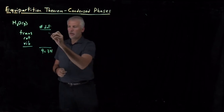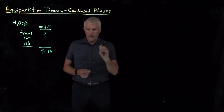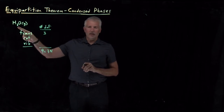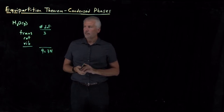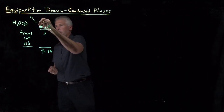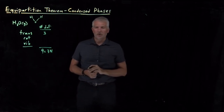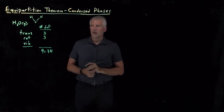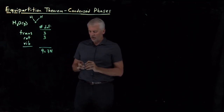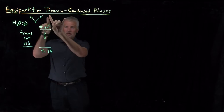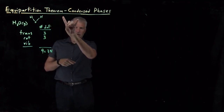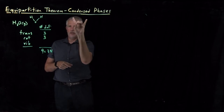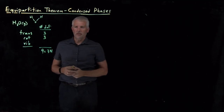As always, there are only three translational degrees of freedom — the molecule can move in x, y, and z. To count the rotations, we ask whether the molecule is linear or nonlinear. Water has a bent geometry, so it's nonlinear, meaning it has three rotational degrees of freedom. We can rotate the HOH molecule around the z-axis, the x-axis, or the y-axis.